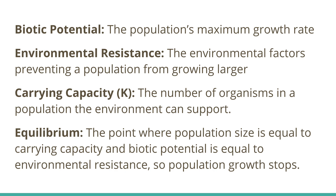Biotic potential is a population's maximum growth rate. In an exponential growth pattern, an organism always grows at its biotic potential, whereas in a logistic growth pattern they can grow at biotic potential for a time, but eventually it slows down due to environmental resistance. Environmental resistance refers to the factors that prevent a population from growing larger — it could be lack of food, or population density leading to disease.